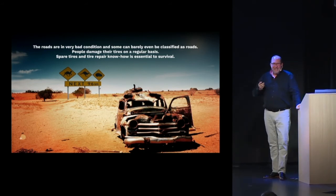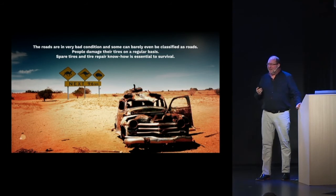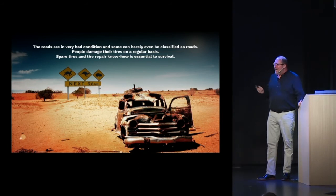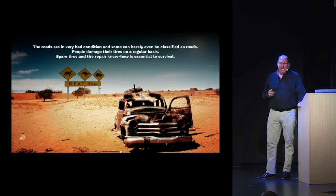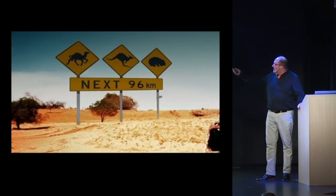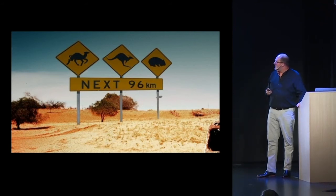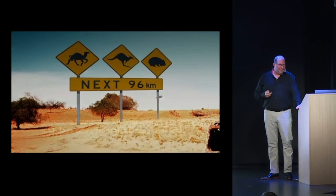You need to know how to change and fix your tire, and should probably pack at least a couple of extra tires if going out for any length of time. The animal crossing signs feature camels, kangaroos, and wallabies rather than deer. The native fauna can kill you, and it may be one to three days to get to the nearest hospital.